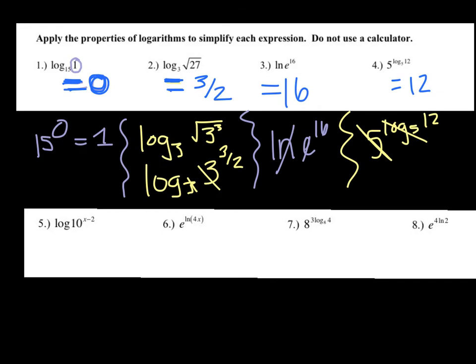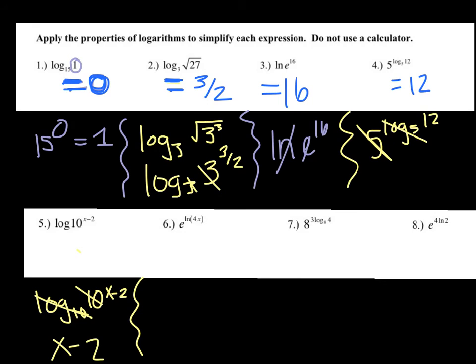Number five: if you don't see a power you know it's a power of one; if you don't see an index in a radical you know it's a power of two. Same thing with logs — we normally work with log base ten because our place values are tens, so if you don't see a base it's really log base ten, and the argument is ten to the power of x minus two. The base of our log and the base of that exponent are the same, so they cancel, and this whole expression equals x minus two.